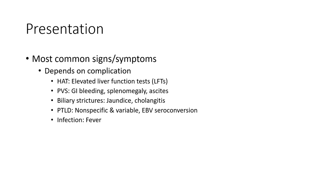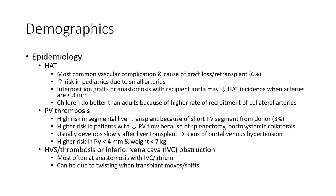PTLD may present with Epstein-Barr virus seroconversion. Regarding epidemiology, HAT is the most common vascular complication and cause of graft loss, occurring in around 6% of transplants. Risk is increased in pediatric patients due to small vessel size. Interposition graft or anastomosis with the recipient aorta may decrease HAT incidence when arteries are less than 3 mm. Children do better than adults because of a higher rate of collateral artery recruitment.